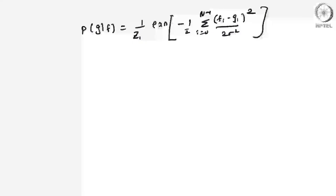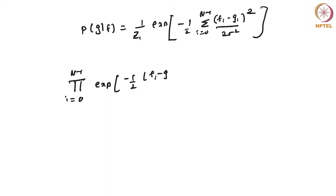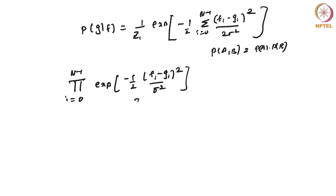To rewrite this: the product over i from 0 to N-1, where the probability of observing each individual pixel is exponential of minus 1/2 times (Fi minus Gi) squared divided by sigma squared. For observing the entire image, you multiply the probabilities, assuming all pixels are independent.